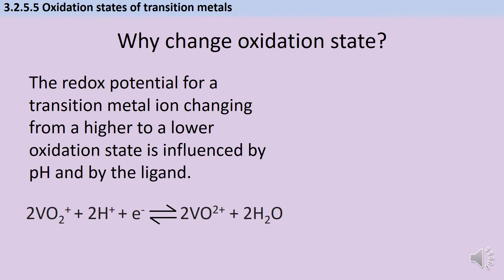You might wonder what causes an oxidation state change in a transition metal. Reaction conditions can play a role: as we saw in the reduction of vanadium, you need hydrogen ions for that reduction to occur. Generally speaking, acidic conditions favour reduction, and given that oxidation and reduction are reverse processes, oxidation is favoured by alkaline conditions. As we change the pH it affects the position of equilibrium — adding hydrogen ions pushes the equilibrium towards the right-hand side by Le Chatelier's principle, favouring the forward reaction. Adding alkali removes hydrogen ions and pushes the equilibrium in the reverse direction.